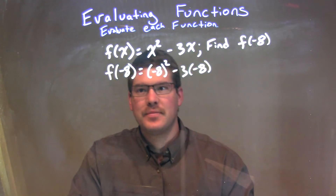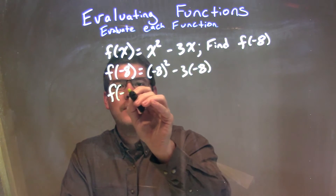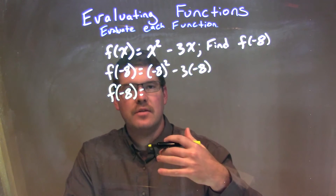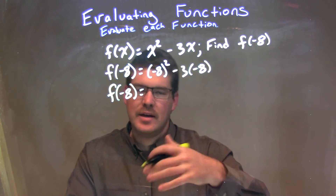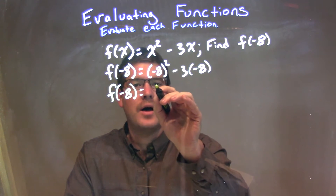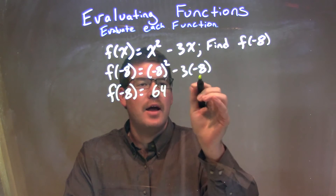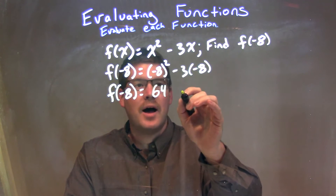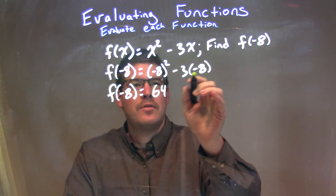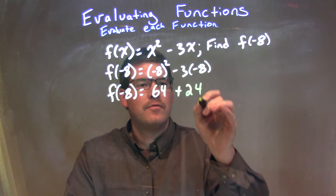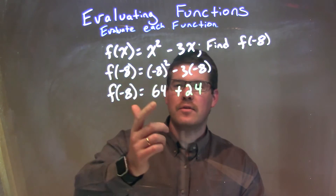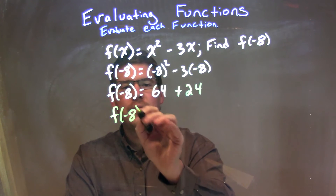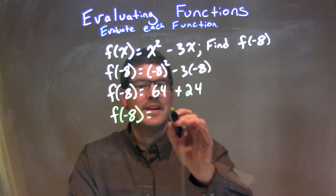Now it's time to simplify. So, f of negative 8 is equal to negative 8 squared, which is a positive 64 — negative 8 times negative 8 is positive 64. And then we have minus 3 times negative 8, which is a positive 24. So this minus 3 times negative 8 is like a plus 24. Now we have 64 plus 24 to add together.